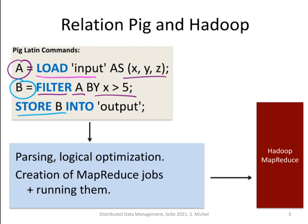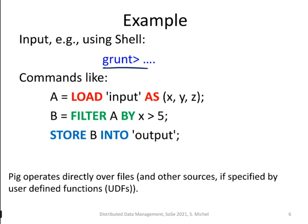When you write a Pig Latin script and submit it, it is parsed and logical optimization occurs — similar to what we know from database systems. In the end, one or multiple MapReduce jobs are started and results are stored in HDFS. Basically, Pig is just a way to make it easier to write MapReduce programs; the underlying realization is still done in Hadoop MapReduce. You can use the Grunt shell to interactively write and execute these command sequences as MapReduce jobs.